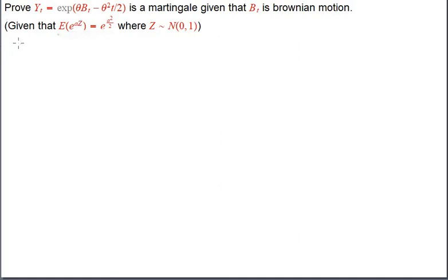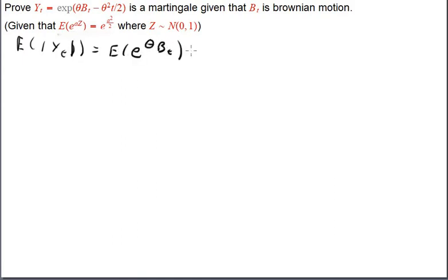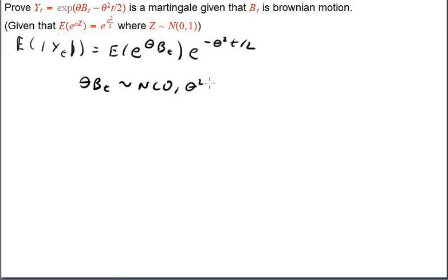The first thing to do is prove the expected value of the modulus is bounded. We want the expected value of the modulus of Y(t), which is equal to the expected value of e to the θB(t) times e to the minus θ²t over 2. Now, θB(t) is distributed as a normal distribution with mean 0 and variance θ²t.